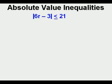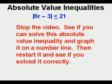Now, let's look at this problem. Absolute value of quantity 6r minus 3 is less than or equal to 21. Stop the video. See if you can solve this absolute value inequality and graph it on a number line. Then restart it to see if you solved it correctly.